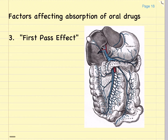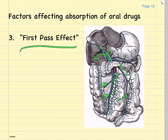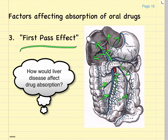Another factor that affects absorption of orally administered drugs is called the first pass effect. This refers to the fact that all substances absorbed through the intestinal wall eventually reach the hepatic portal vein and get carried back into the liver through the hepatic portal circulation before ever going into the systemic circulation. This means the liver, whose job it is to detoxify various substances, may end up extensively removing certain drugs before they ever reach the circulation. What do you think would happen if the liver was diseased? We will talk about that in class.